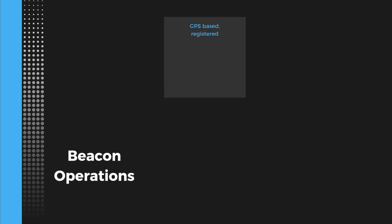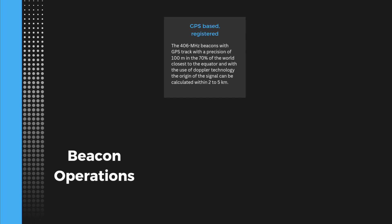There are several types of ELT beacon operation. Number 1: GPS-based. The 406 beacon with GPS tracking has a precision of 100 m in 70% of the world closest to the equator, so the responsible authority can look up and notify the registrant within 4 minutes.